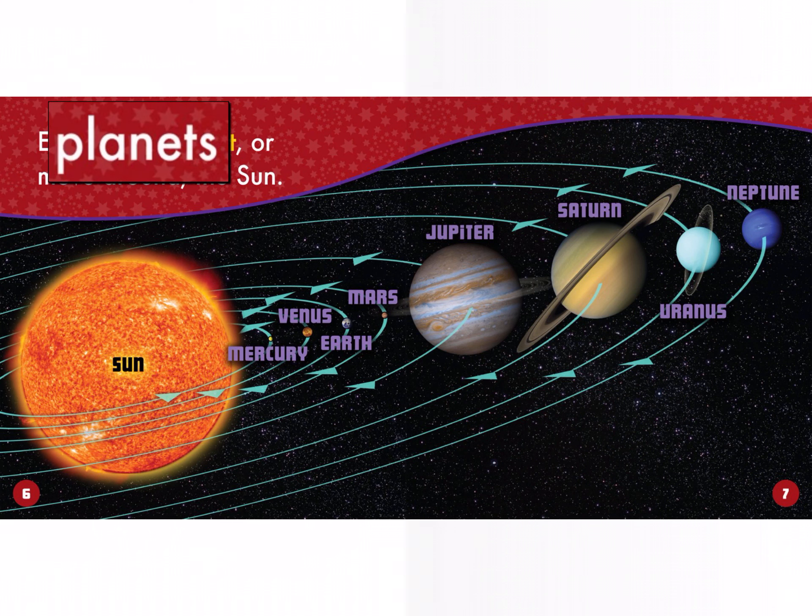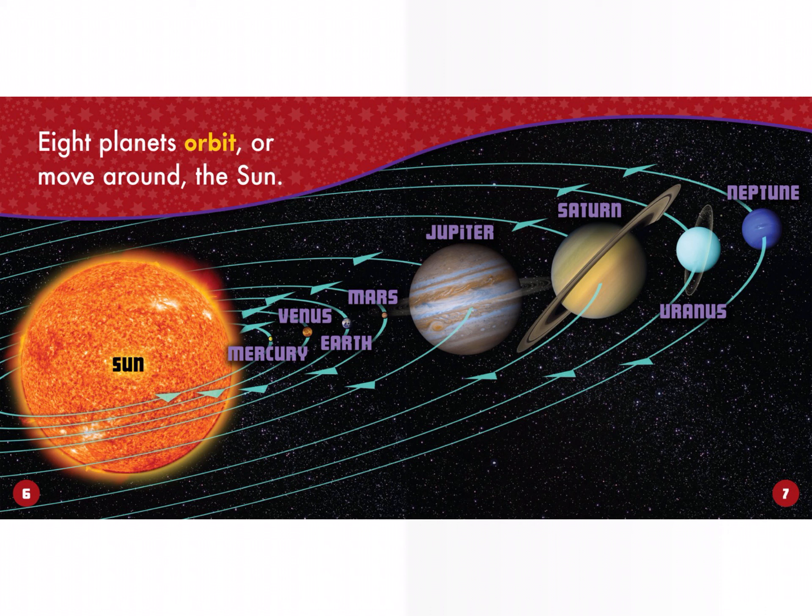Eight planets orbit or move around the Sun: Mercury, Venus, Earth, Mars, Jupiter, Saturn, Uranus, Neptune.